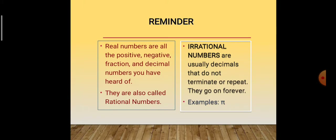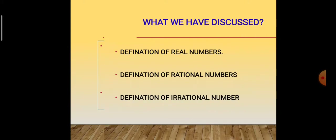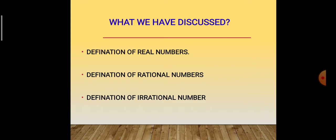Once again, a reminder. Real numbers are all the positive, negative, fraction, and decimal numbers you have heard of — they are also called rational numbers. Irrational numbers are usually decimals that do not terminate or repeat; they go on forever. Example: √5. So, what we discussed today: definition of real numbers — collection of rational and irrational numbers. Definition of rational numbers — the number in the form of P by Q. Definition of irrational numbers — the number not in the form of P by Q.